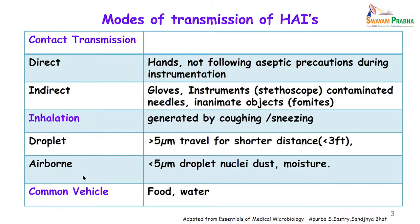In indirect methods, transmission is through gloves, instruments like stethoscopes, contaminated needles, or after touching inanimate objects. Inhalation is generally generated by coughing, sneezing, or the presence of organisms in the air. Droplet inhalation deals with organisms more than 2 micrometers in size and travels shorter distances, usually less than 3 feet. Airborne infections involve particles less than 5 microns in size and remain suspended for longer periods. Common vehicle transmission is through food or water.